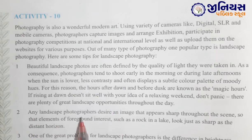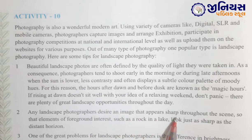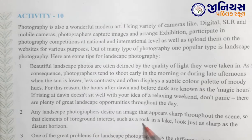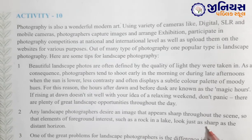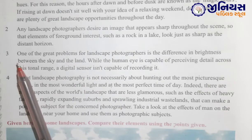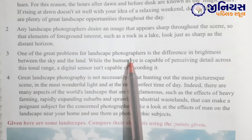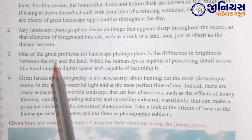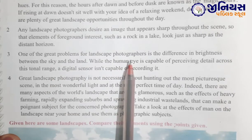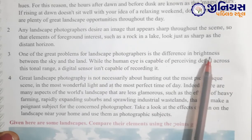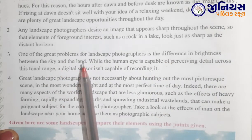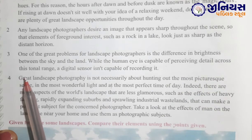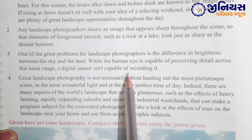Second tip: any landscape photographer desires an image that appears sharp throughout the scene, so that elements of foreground interest — such as a rock in a lake — look just as sharp as the distant horizon. Third tip: one of the great problems for landscape photographers is the difference in brightness between the sky and the land. Landscape photographers ki jo bahut badi problem hoti hai, wo brightness ka difference hota hai sky aur land ke beech mein.